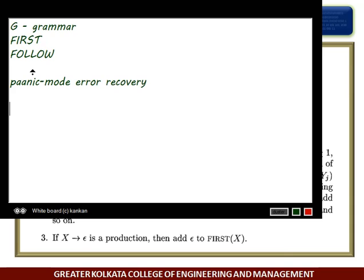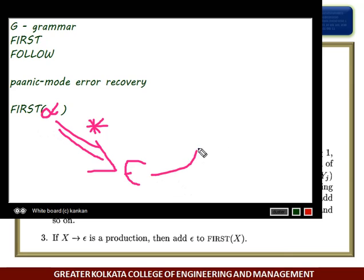I am defining FIRST(alpha), where alpha is any string of grammar symbols, to be the set of terminals that begin strings derived from alpha. If alpha directly derives epsilon, then epsilon is also in FIRST(alpha).